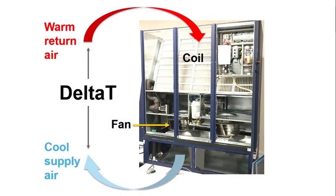Let's start with this slide that shows a picture of a cooling unit. You'll notice that the warm return air is coming up through the filter and then through the cold coil underneath. The hot air, once it goes through the cold coil, will come out cold at the bottom. The idea is to maximize the capacity of your cooling unit by increasing the temperature difference between the return and the supply air.